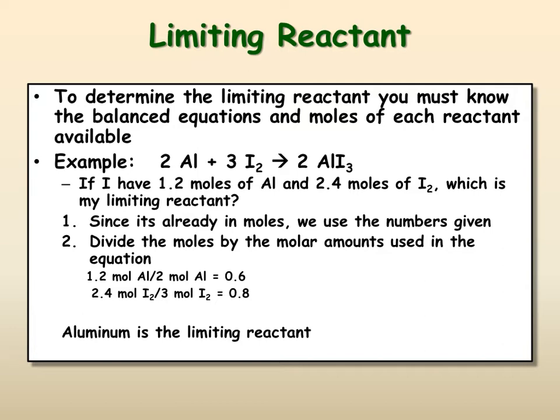Because if those two numbers were equal to each other, 0.6 and 0.6, then we would use it both completely. But in this case, we're going to have 0.2 moles of iodine left over.